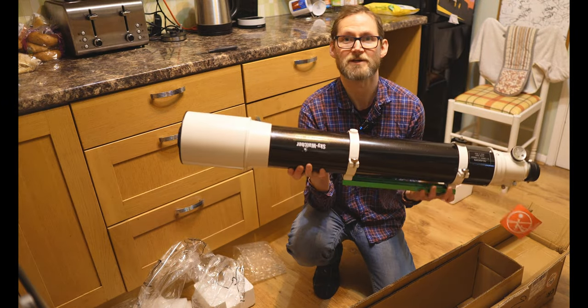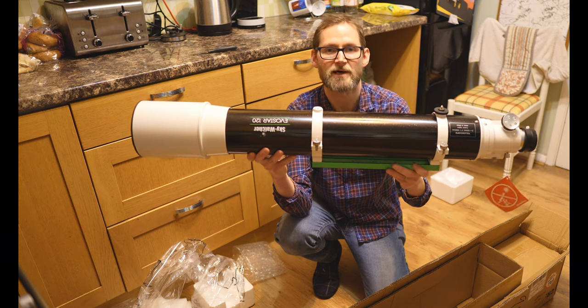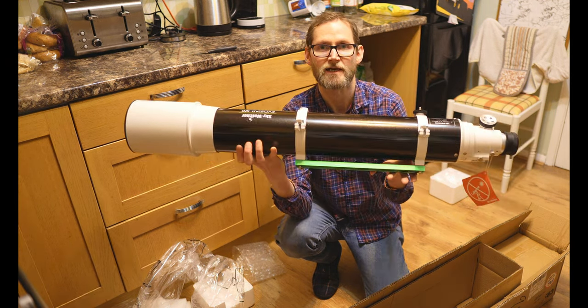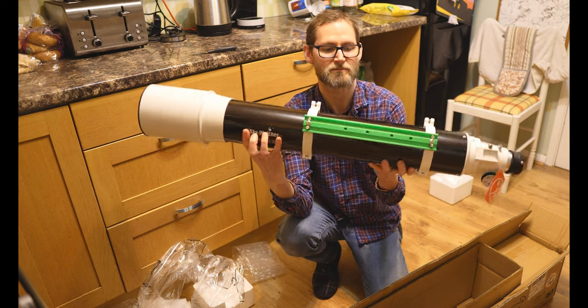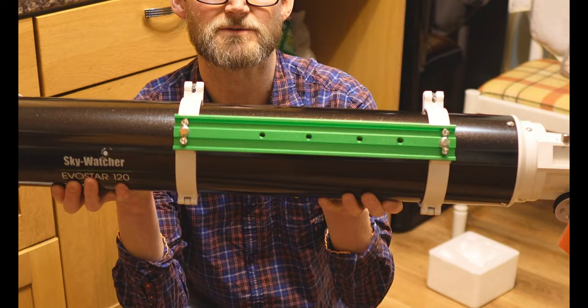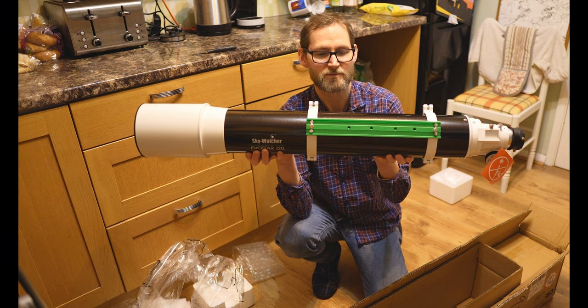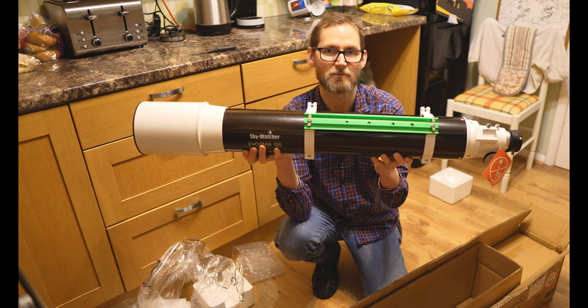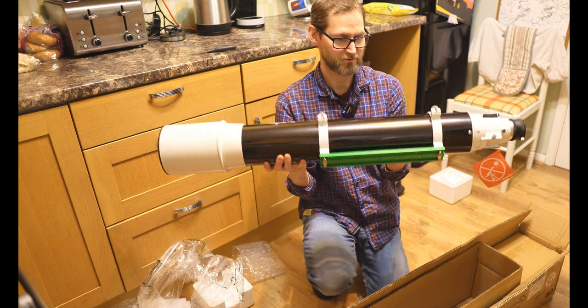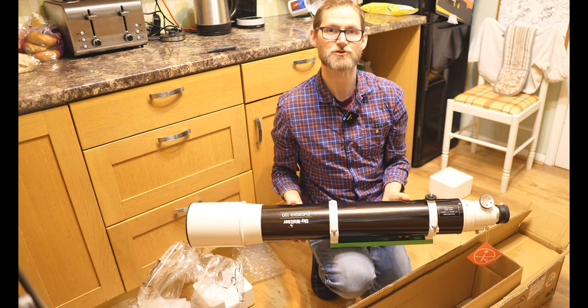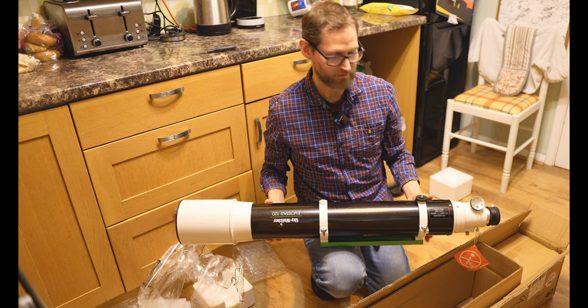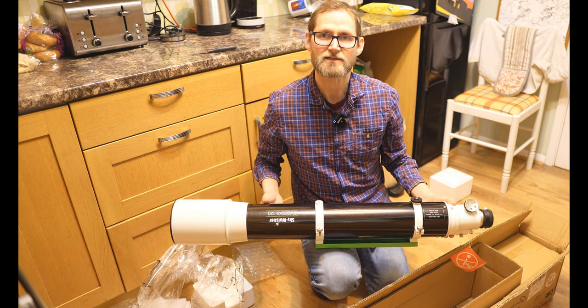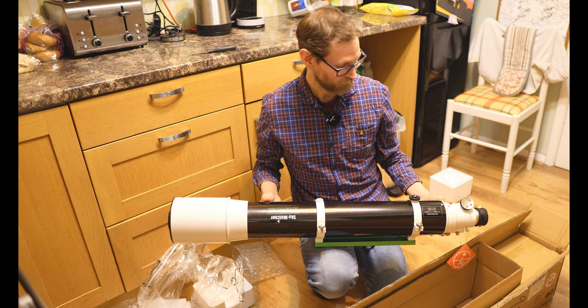Okay, so here it is. It's quite a beast. It weighs about 5.1 kilograms with the rings and dovetail. It's a Vixen style standard dovetail but sometimes they can be quite short on refractors and this is a nice long one to help with balance. You can also move the rings up and down the tube as well to help with balance, so there shouldn't be any problems balancing this telescope in declination on the EQ5 mount that I've got for it.